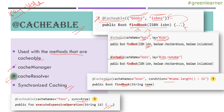There are cache managers and cache resolvers also to manage all the caching. By default, Spring Boot provides and configures that for us. We also have options to customize them. Inside the @Cacheable annotation, you can pass cacheManager and cacheResolver attributes. I will be showing all these things in the demo.